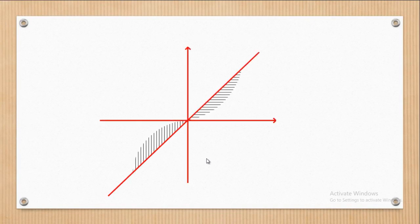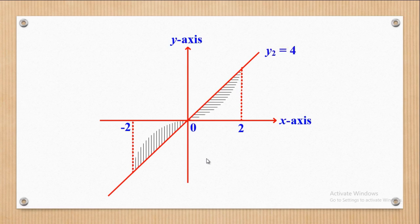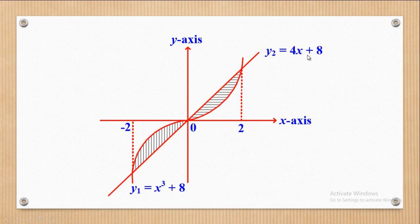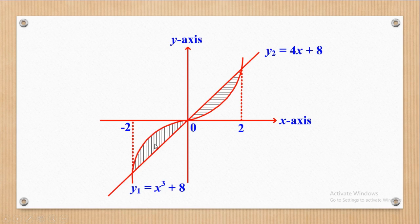Looking at the sketch: the line y equal to 4x plus 8 and the curve y equal to x-cubed plus 8 have three intercepts, meaning one area is above the line and the other is below. When you get three points of intersection, remember that one area is below the line and another is above. So you split it into two parts: first get the area from negative 2 to 0, then add the area from 0 to 2.